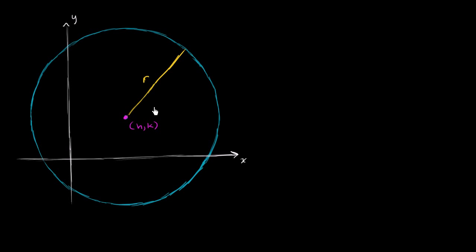I've drawn a circle here with radius r, and its center is at the point h comma k. So its x-coordinate is h, and its y-coordinate is k right over here. What I want to do is figure out a general formula for the equation of this circle. All the points on the circle are the ones that are exactly the radius away from the center — their distance from the center is exactly going to be r.